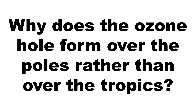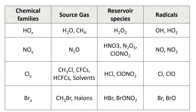You might therefore wonder why the ozone hole forms over the poles rather than over the tropics. This is because most of the free radicals initially react with other free radicals instead. These reactions form new compounds called reservoir species, which are relatively stable and can temporarily store radicals in an inert form, preventing them from reacting with ozone. These reservoir species allow transport over long distances before being broken down to reform the radicals, allowing them to store chlorine and bromine for future use and producing a non-linear response to emissions of ozone depleting substances.